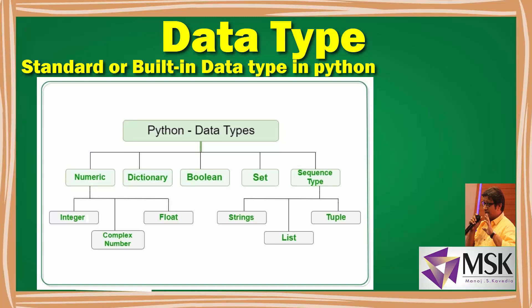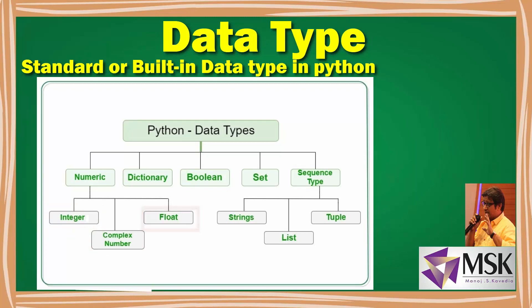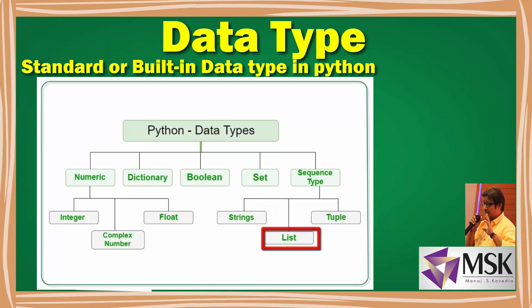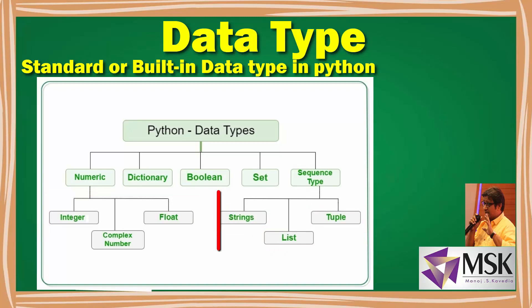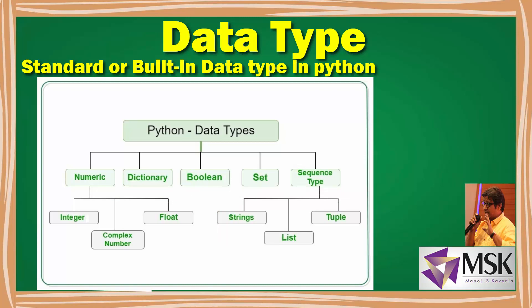The numeric type is further classified into integer, complex numbers, and float. Dictionary itself is a data type, then comes boolean, then set. Sequence also has different data types: string, list, and tuple. So numeric has three types — integer, complex, and float — and sequence has three types — string, list, and tuple.